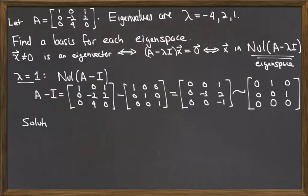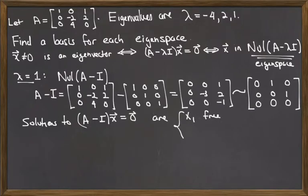So this allows us now to write down the solutions to the equation A minus I times x equal to 0. Because there is no pivot in the first column, we see that the first variable x1 must be free. The second variable is equal to 0, and the third variable, x3, is also equal to 0.